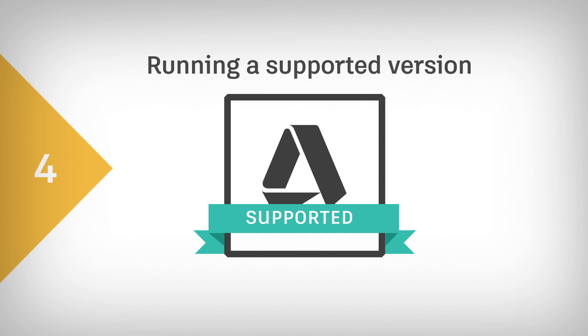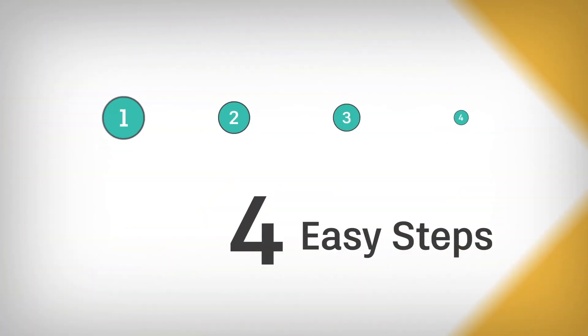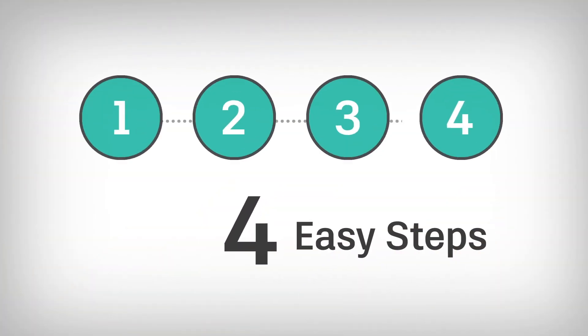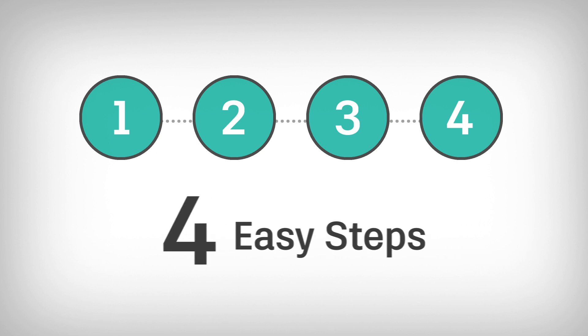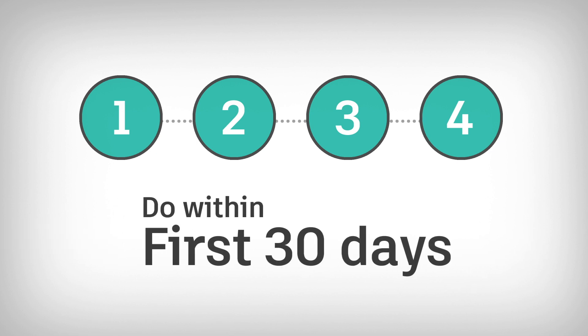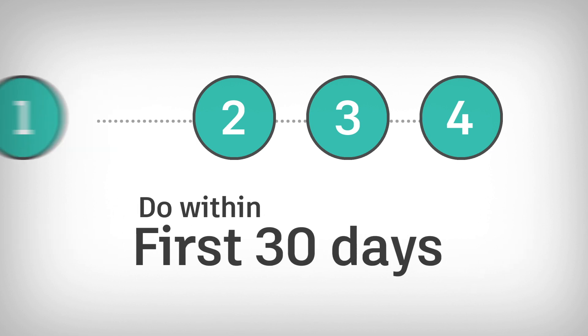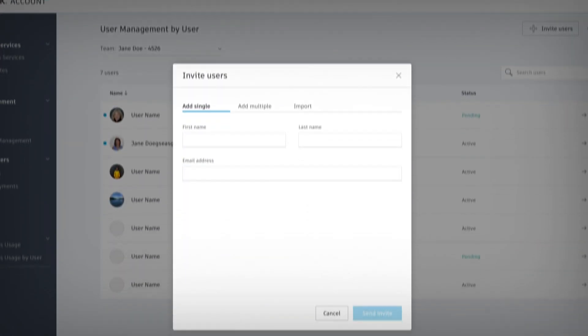Your new named user subscription is only compatible with the current version or up to five versions back. You can make the transition in four easy steps. Here's what you'll need to do in your first 30 days after trade-in. First, you'll need to add users.